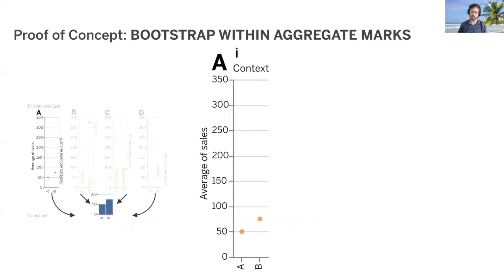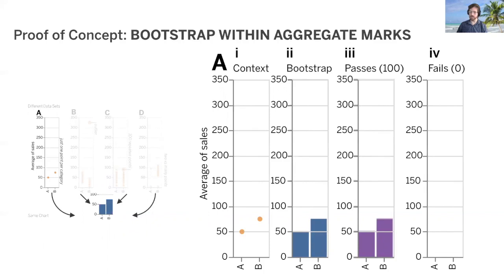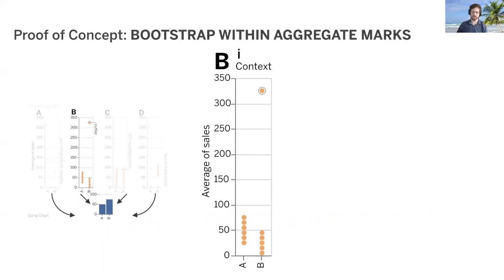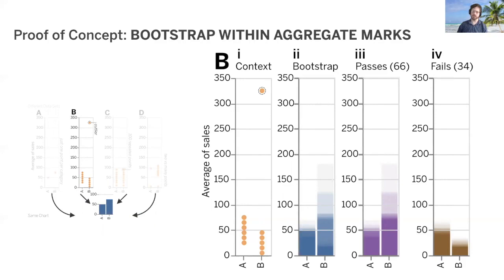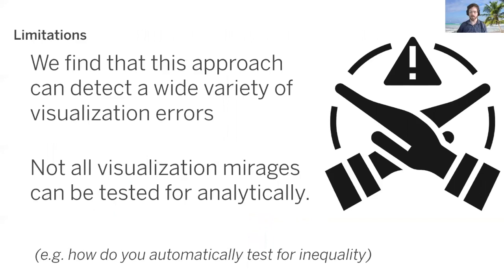Testing through data manipulation can be made more effective in some scenarios by taking a statistical view. For instance, here we are investigating whether the insight displayed in our bar chart from the top of the talk is robust. To answer this question, we can bootstrap within our data classes — that is, within A and B. We find that no matter how many bootstraps we run, we always find that the bars have the same ordinal relationship: A is less than B. This suggests that the insight is robust — no test failure. What about the second example, where the aggregation was predominantly driven by an outlier? Well, bootstrapping the marks shows that the insight only held up about two-thirds of the time — an assertion failure. This doesn't seem to be a good basis on which to make decisions.